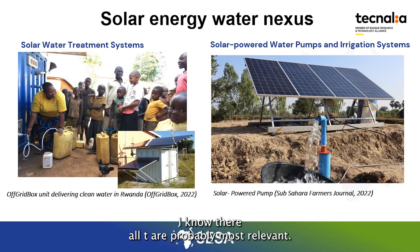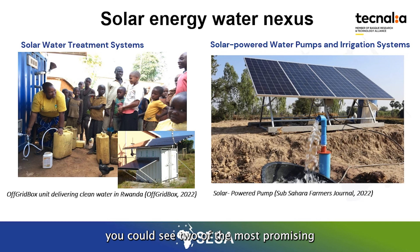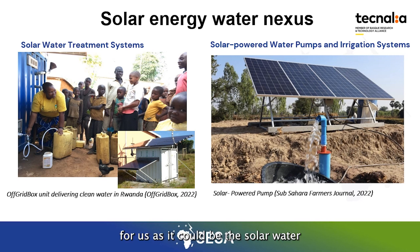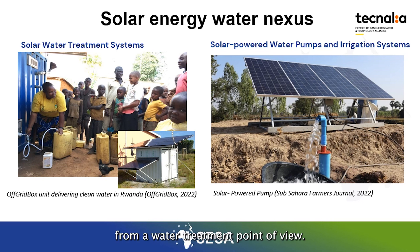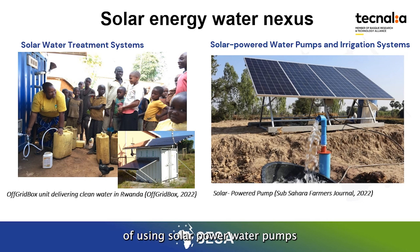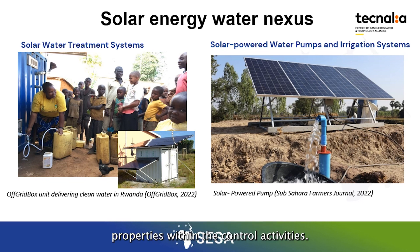Another of the most relevant nexus of solar energy is the one with water. In the current slide, you can see two of the most promising applications for the African context: solar water treatment solutions that can be powered by solar both from an electrical and a water treatment point of view, and on the right side, solar-powered water pumps for obtaining water for irrigation purposes within agricultural activities.